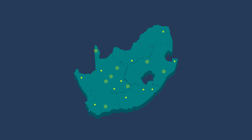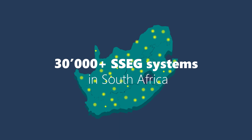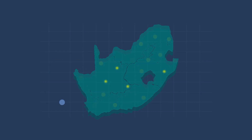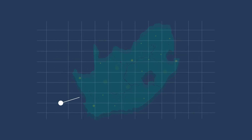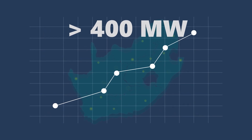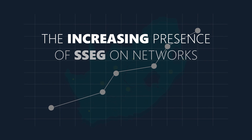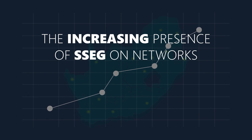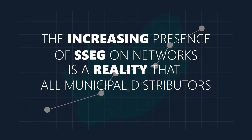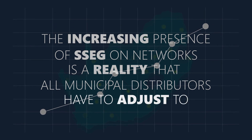As of the middle of 2020, it is estimated that there were tens of thousands of such small systems in place amongst municipal distributors, totalling at least 400 megawatts, and these numbers are growing steadily. The increasing presence of SSEG on networks is a reality that all municipal distributors have to adjust to.